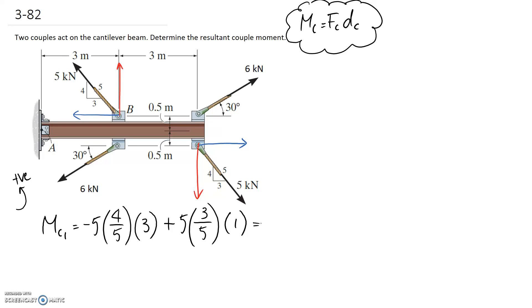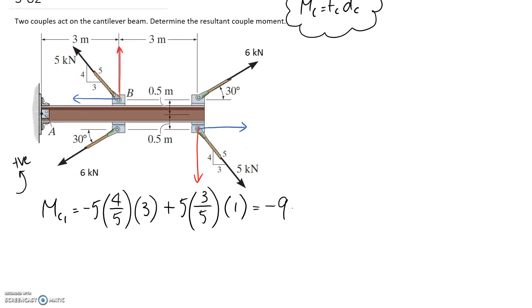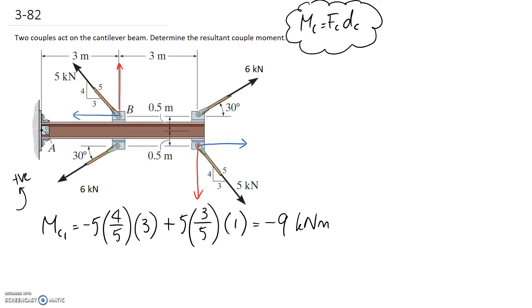So it's going to go in the equation as positive. So if you simplify these numbers in a calculator, you end up with negative nine, and the units are going to be kilonewton meters, since all your forces are in kilonewtons and all your distances are in meters. All right. So now we just need to work out the second one, so I'm going to call it MC2.